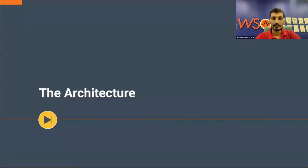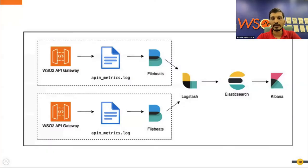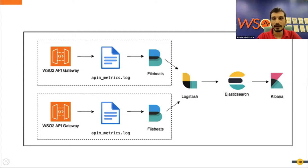Let's move on to the architecture. The on-prem analytics solution is powered by the ELK stack. We use Logstash, Elasticsearch, Kibana, and Filebeat to facilitate the analytics solution. The API Manager gateway will write analytics data into a log file, and that log file will be read by Filebeat and published into the ELK stack.